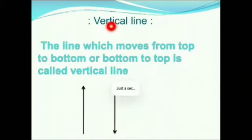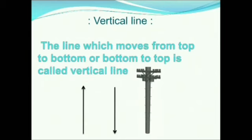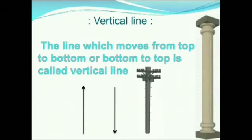Next, we will move to vertical line. The line which moves from top to bottom or bottom to top is called a vertical line. There is a picture of an electric pole and a pillar of a house. Are there any vertical lines in these pictures? Yes. You see electric poles while walking on the road, and we also see pillars in the construction of buildings. When we stand straight, our body will also look like a vertical line.